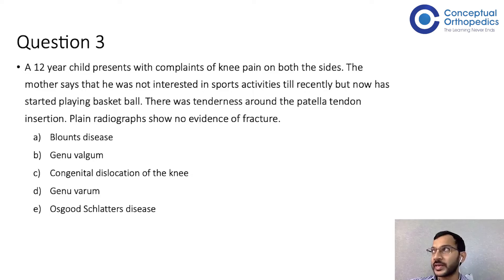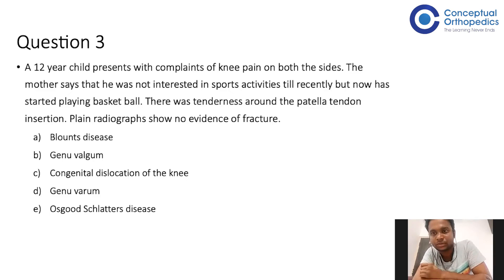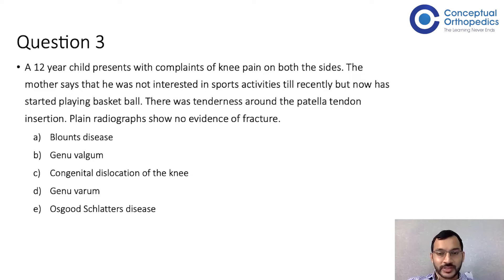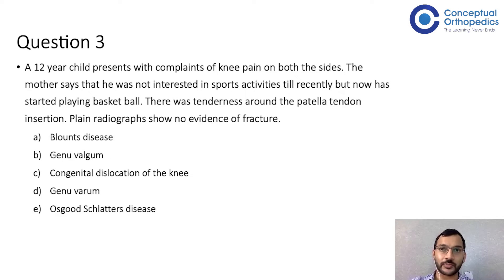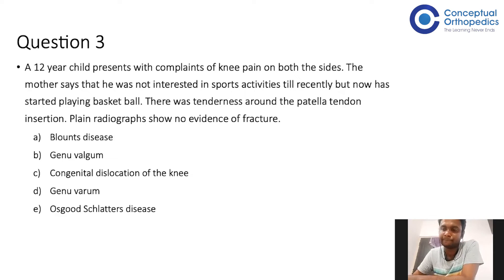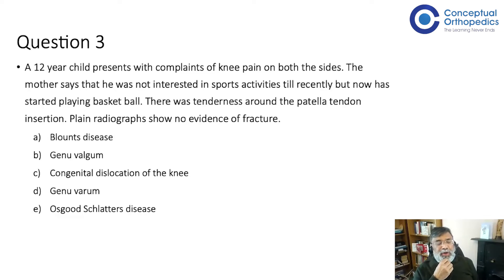If a child presents with pain over the inferior pole of the patella with similar findings, that is Sinding-Larsen-Johansson syndrome. Osteochondrosis can happen at either end — at the tibial tuberosity it is Osgood-Schlatter's disease, and at the inferior pole of the patella it is Sinding-Larsen-Johansson syndrome. Since these are MCQs, you need to know all named conditions across the body.